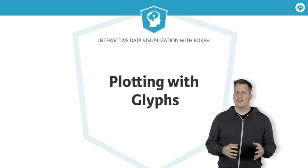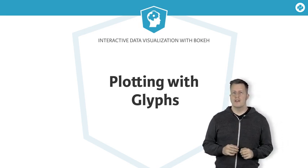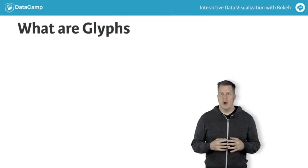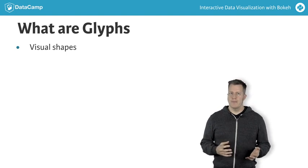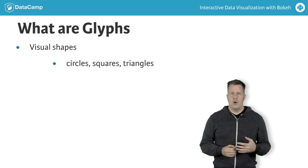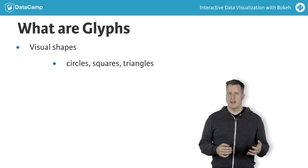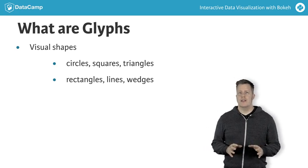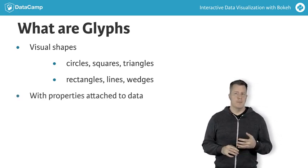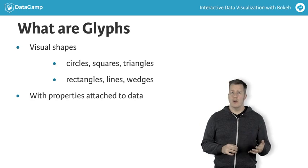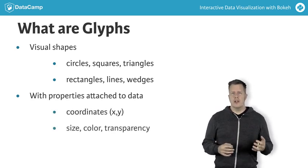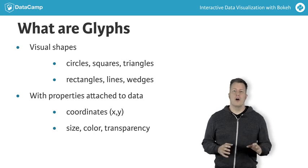Into this plot, you can add glyphs that connect visual properties directly to your data. Glyphs are visual shapes that can be drawn on the screen. These can be simple point-like markers such as circles, squares, or triangles, or more sophisticated shapes such as rectangles, lines, patches, wedges, and others. In every case, these shapes have visual properties that can include things like position, or x and y coordinates for locating a shape on the plot, size or radius, fill and outline colors, or transparency, also called alpha.